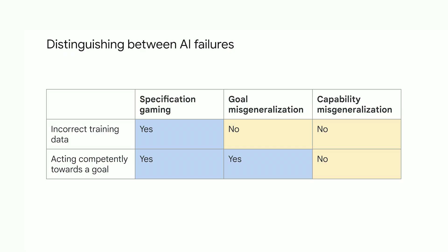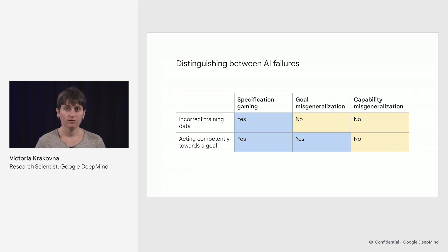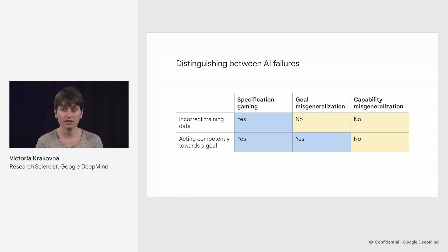One question is: did the system receive incorrect training data? For specification gaming, the answer is yes — the system received incorrect feedback due to some flaws in the design specification. For example, that robot hand got a positive reward for hovering when it should have received a negative reward. But for generalization failures, the answer is no, because those failures can happen despite correct data in the training setting.